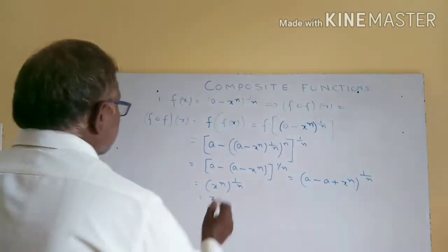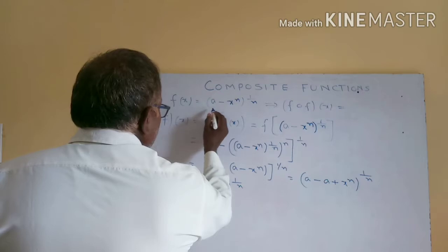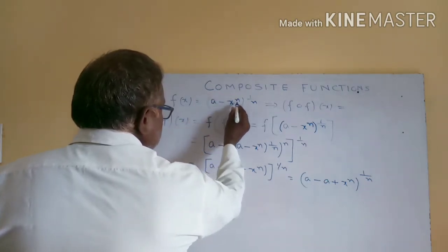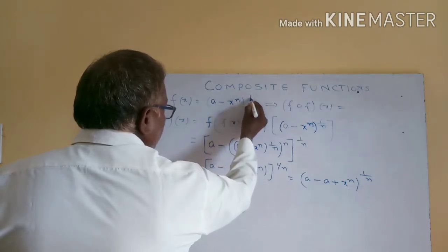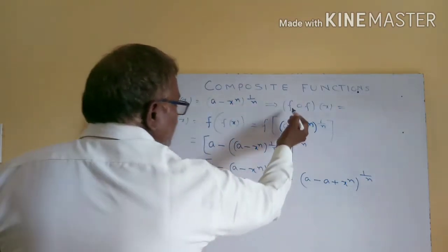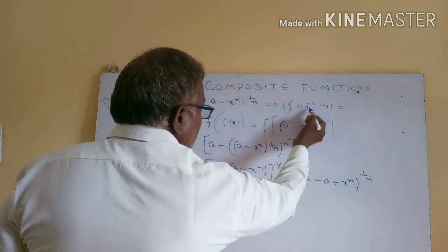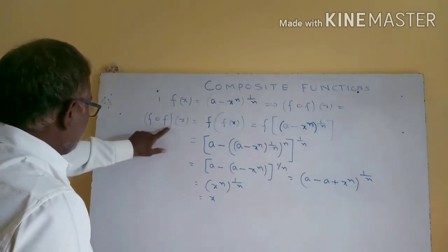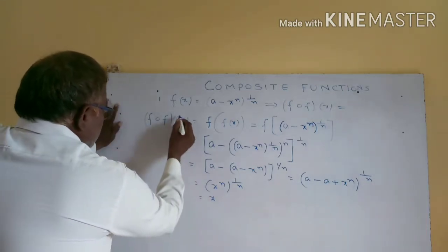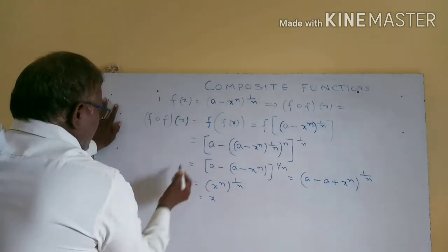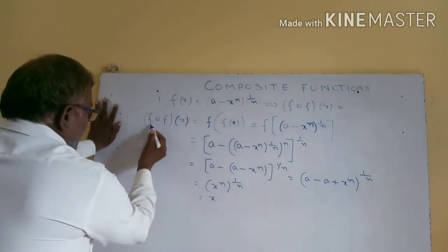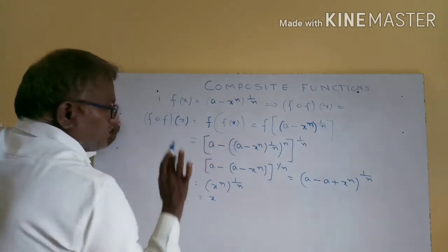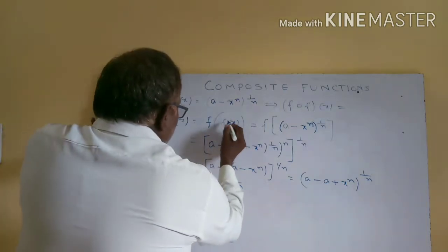Here f(x) is equal to (a minus x power m) whole power 1 by m. Then f circle f(x) is equal to... Now f circle f(x).